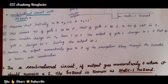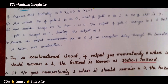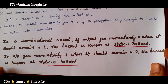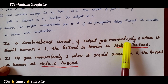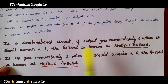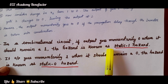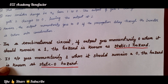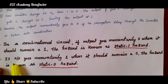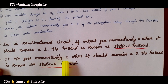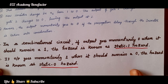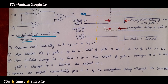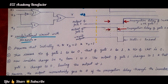In this way we can explain hazards in a combinational circuit. Now let us define the types: Static 1 hazard — if the output goes momentarily to 0 when it should remain at 1, it is known as static 1 hazard. Static 0 hazard — if the output goes momentarily to 1 when it should remain at 0, it is known as static 0 hazard. The dynamic hazard will be covered in the next video.